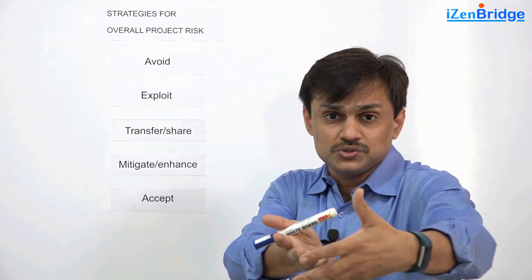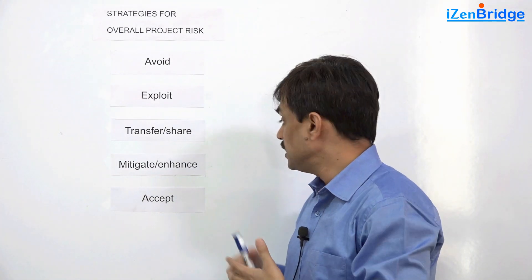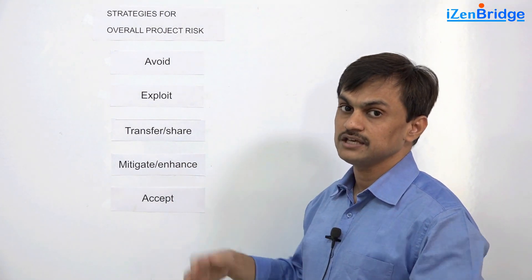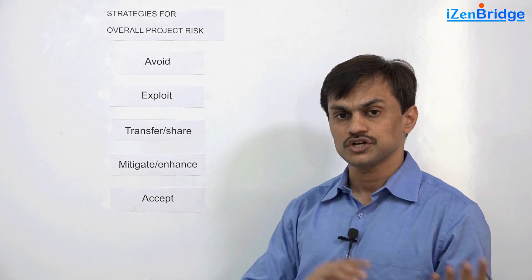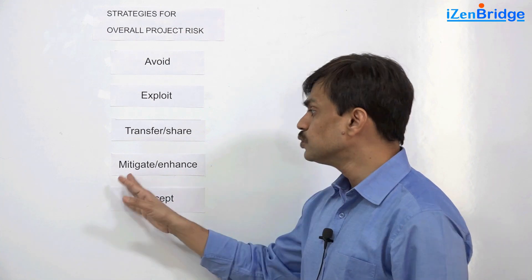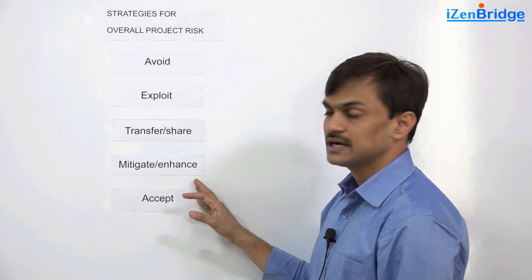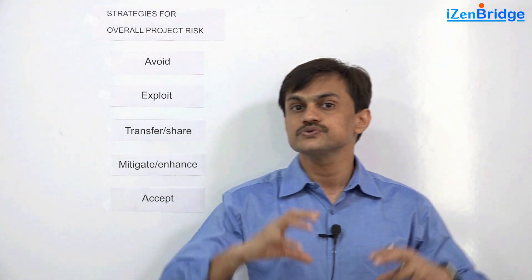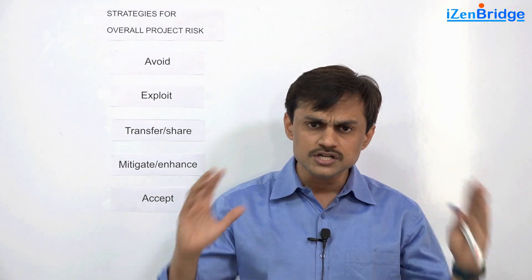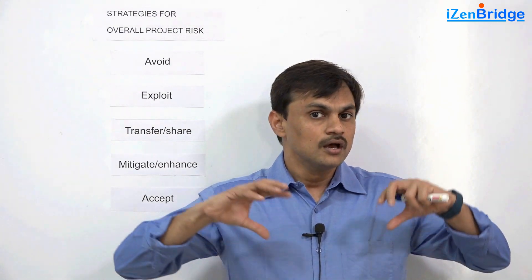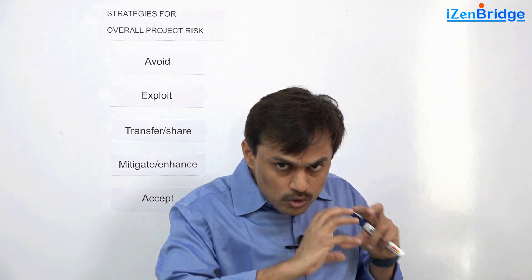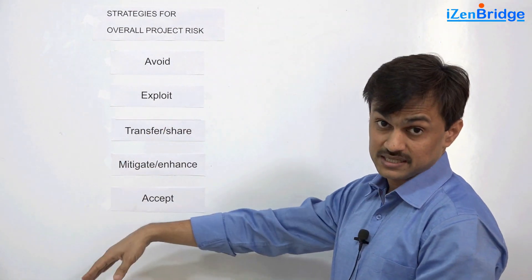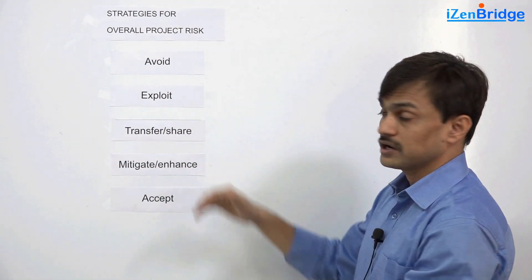Mitigate and enhance are about a proactive approach to managing overall project risk, whether threat or opportunity. If it is a threat you look at mitigate; if it is an opportunity you look at enhance. You plan things inside the project — the milestones, frequent reviews, stakeholder engagement, contractual arrangements, and the overall project approach — so that overall project threats get mitigated and overall project opportunities get enhanced.